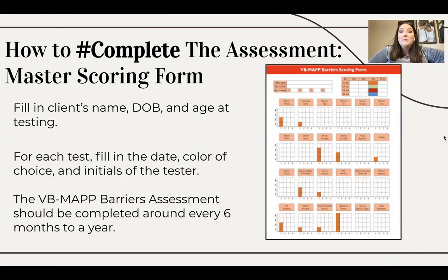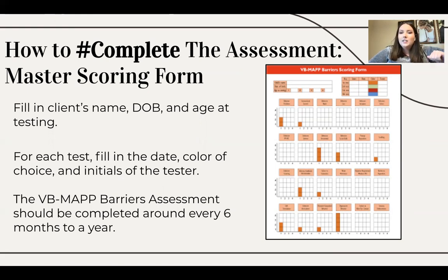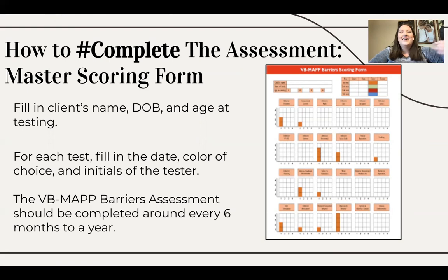Here's the visual representation of the color coding. On the master scoring form, in the upper left-hand corner you're going to fill in the client's name, date of birth, and age at testing. In the upper right-hand corner, for each assessment you'll fill in the date, a color of choice, and the initials of the tester — for example, orange, green, red, and blue to represent each different assessment completed every six months. The VBMAP Barriers Assessment should be completed around every six months to a year, at the same time you're doing your other assessments like the APLES or the original VBMAP.